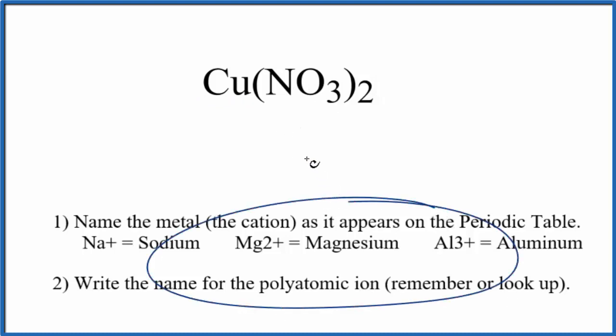So we can use these rules here to write the name for Cu(NO3)2. First we'll write the name for the metal. That's the copper here. So copper.